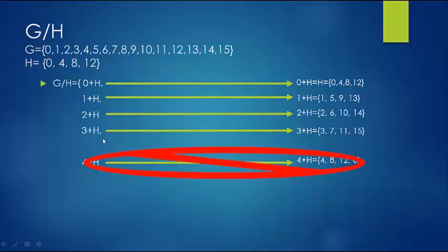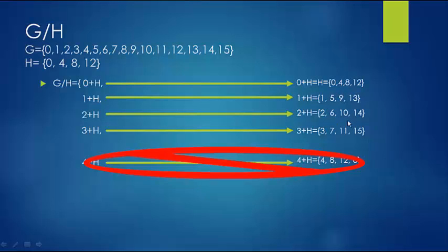You'll also notice that in our factor group we have every element of our main group G: 0, 1, 2, 3, 4, 5, 6, 7, and so on. The factor group contains all elements of G. And as expected, the order is 4 — we have 4 distinct cosets. We're talking about the number of cosets, not the order of each individual coset.